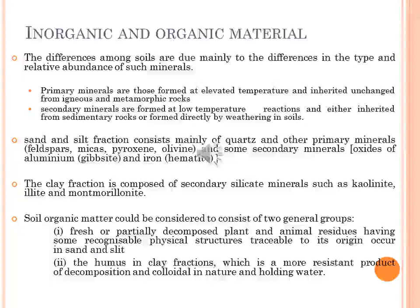Sand and silt fractions consist mainly of quartz and other primary minerals such as feldspar, mica, pyroxene, and olivine. In addition, some small amounts of secondary minerals such as oxides of aluminum, gypsum, and iron hematite are also found. The clay fraction is mainly composed of clay silicate minerals such as kaolinite, illite, and montmorillonite.